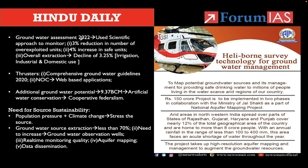The Groundwater Assessment Report 2022 recently came out using various scientific approaches to monitor. Key findings: there is a 3% reduction in the number of overexploited units. In safe units, the health of the aquifer is in good condition — there is a 4% spike in safe units. The overall extraction is also on the decline, almost 3.25%. The government has taken various initiatives in irrigation, industrial, and domestic use, bringing overall extraction down by about 3.25%.